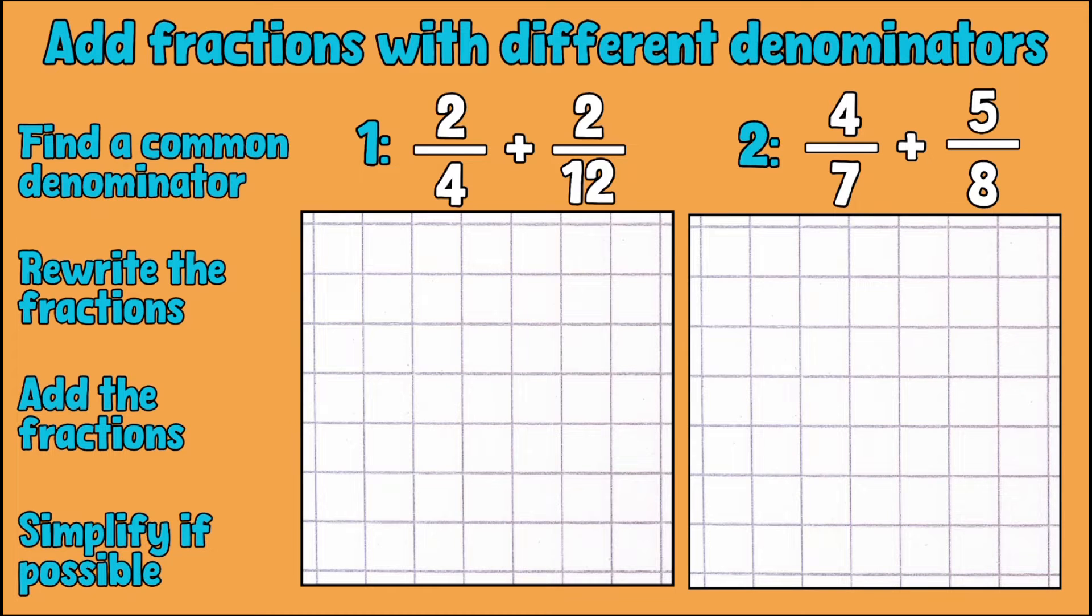For our first example we have two quarters add two twelfths. Now I've written some instructions down the left hand side here so the first thing that we're going to need to do is try and find a common denominator because it's really difficult to add fractions or subtract fractions with fractions that have different denominators, so absolutely our first port of call is to do that.